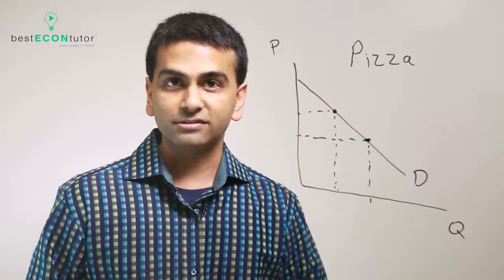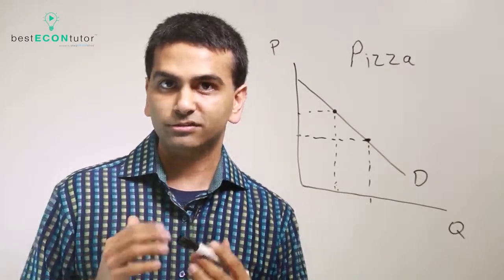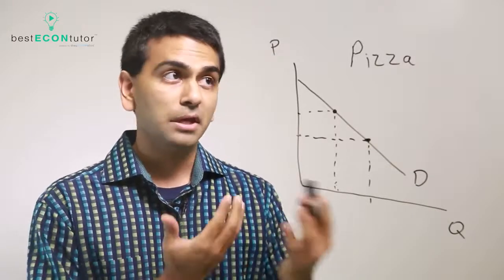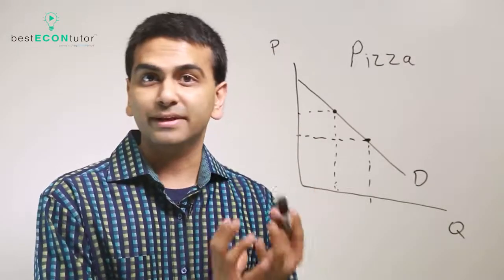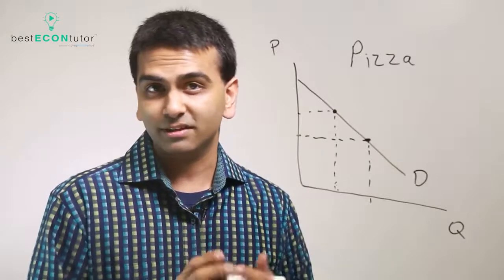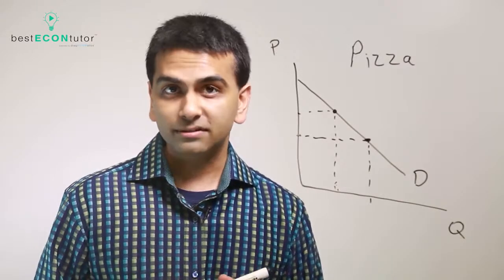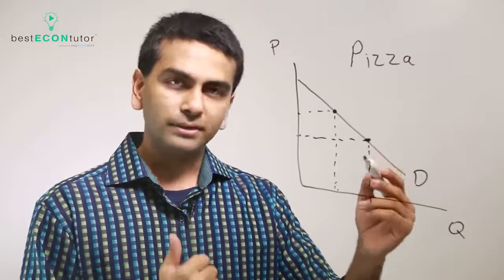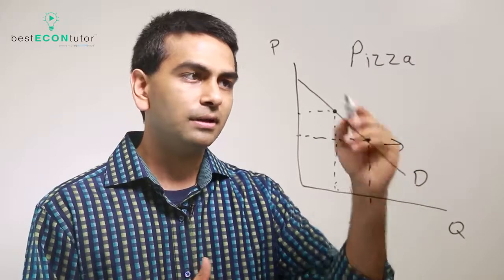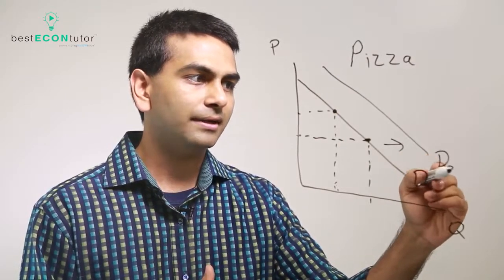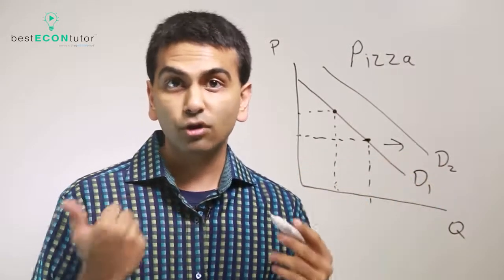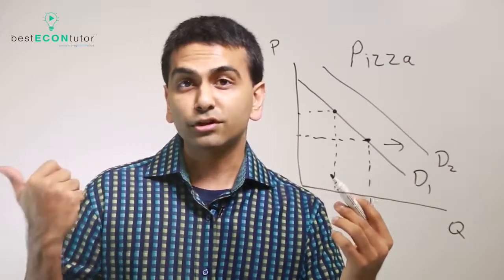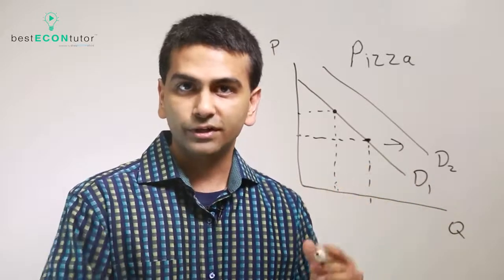Well, one thing is prices of related goods. So not the price of pizza itself, but let's say Coca-Cola, which we can assume people usually have as a complement to pizza. They usually have Coke with pizzas. Well, in that case, if Coke becomes cheaper, then people will actually demand more pizza. So in that case, the entire curve for pizza, the demand curve shifts to the right. The demand goes to the right if Coke becomes cheaper. So another good does have the ability, another good's price changing does have the ability to change the demand for your good.